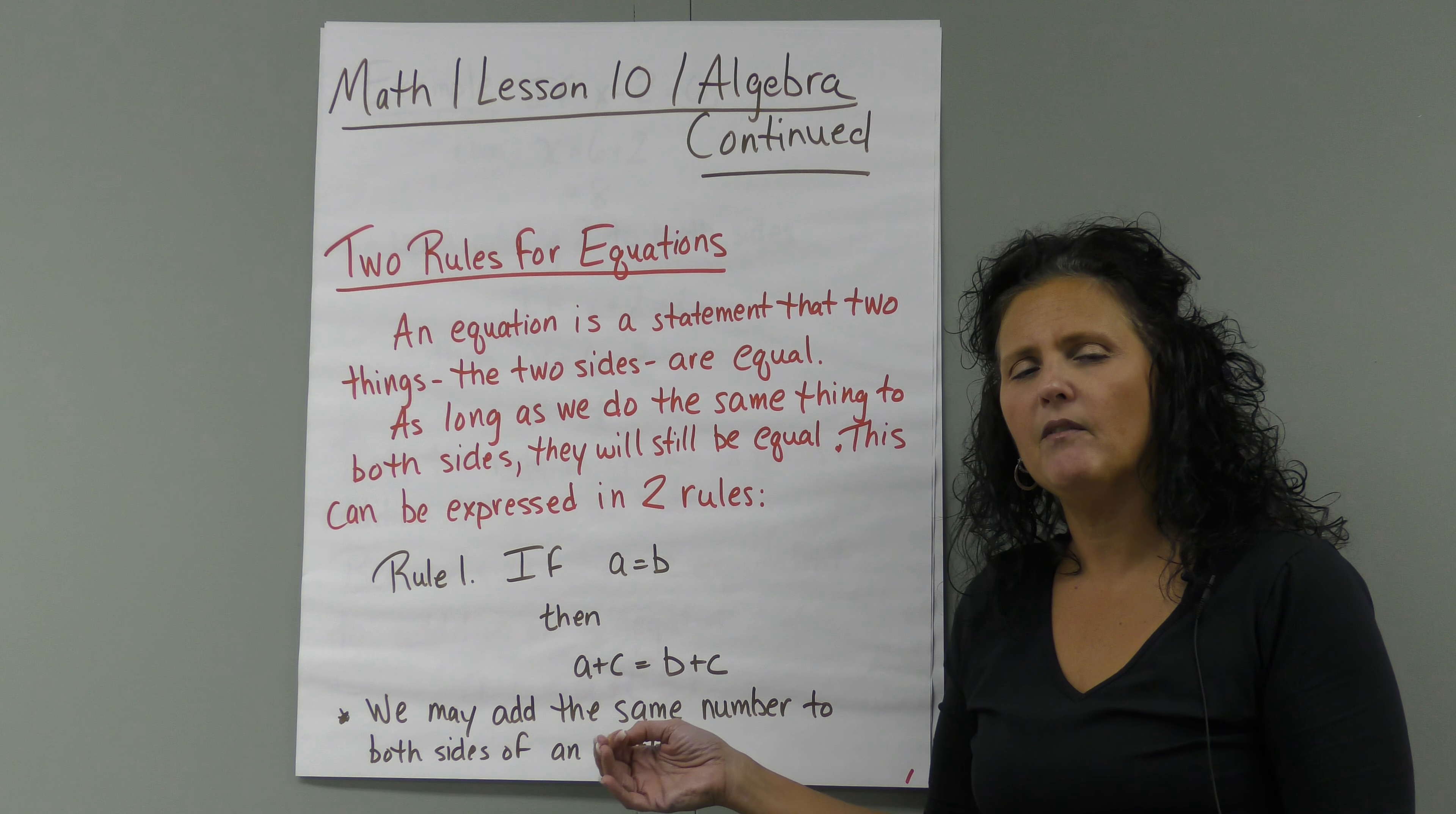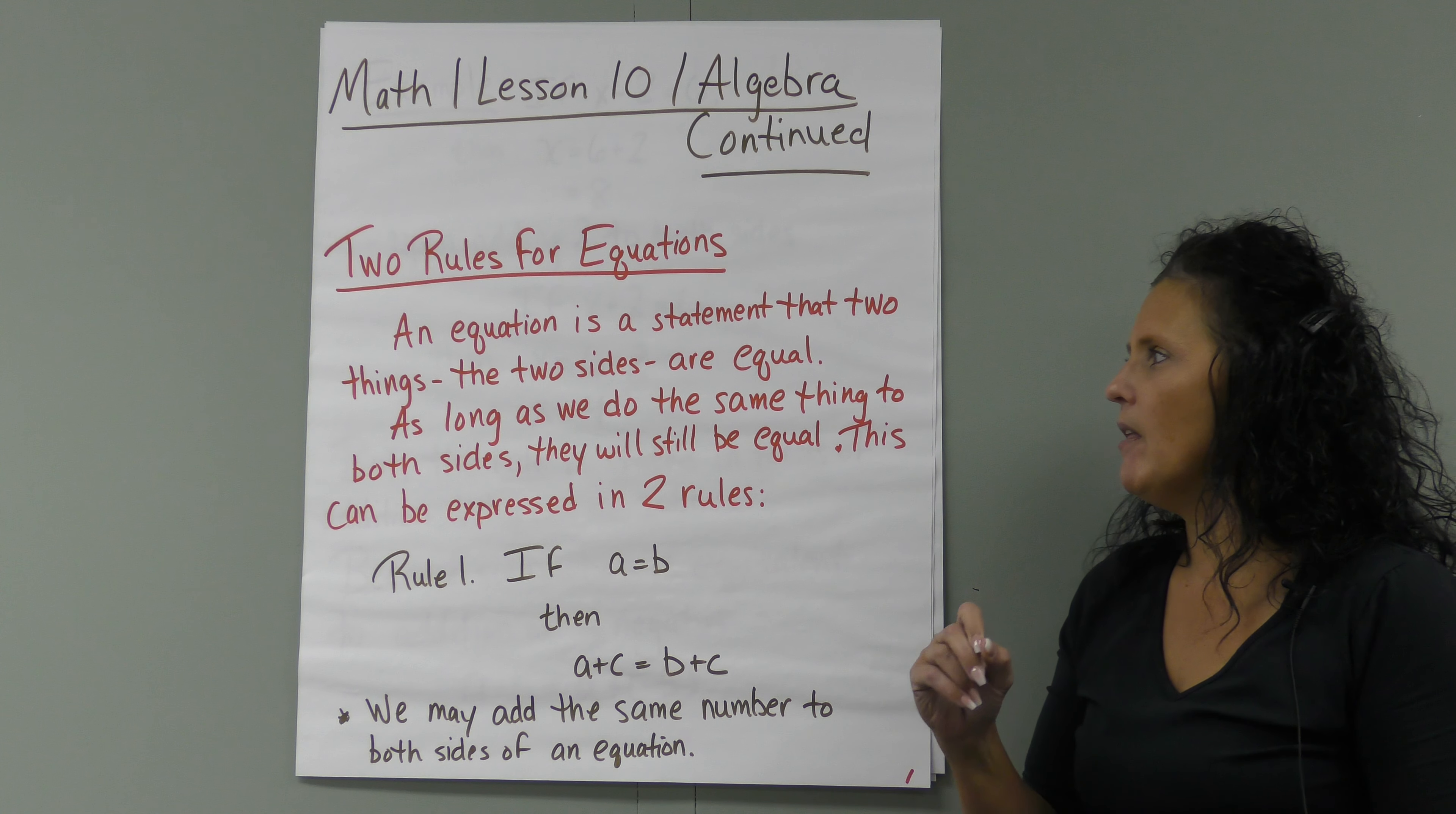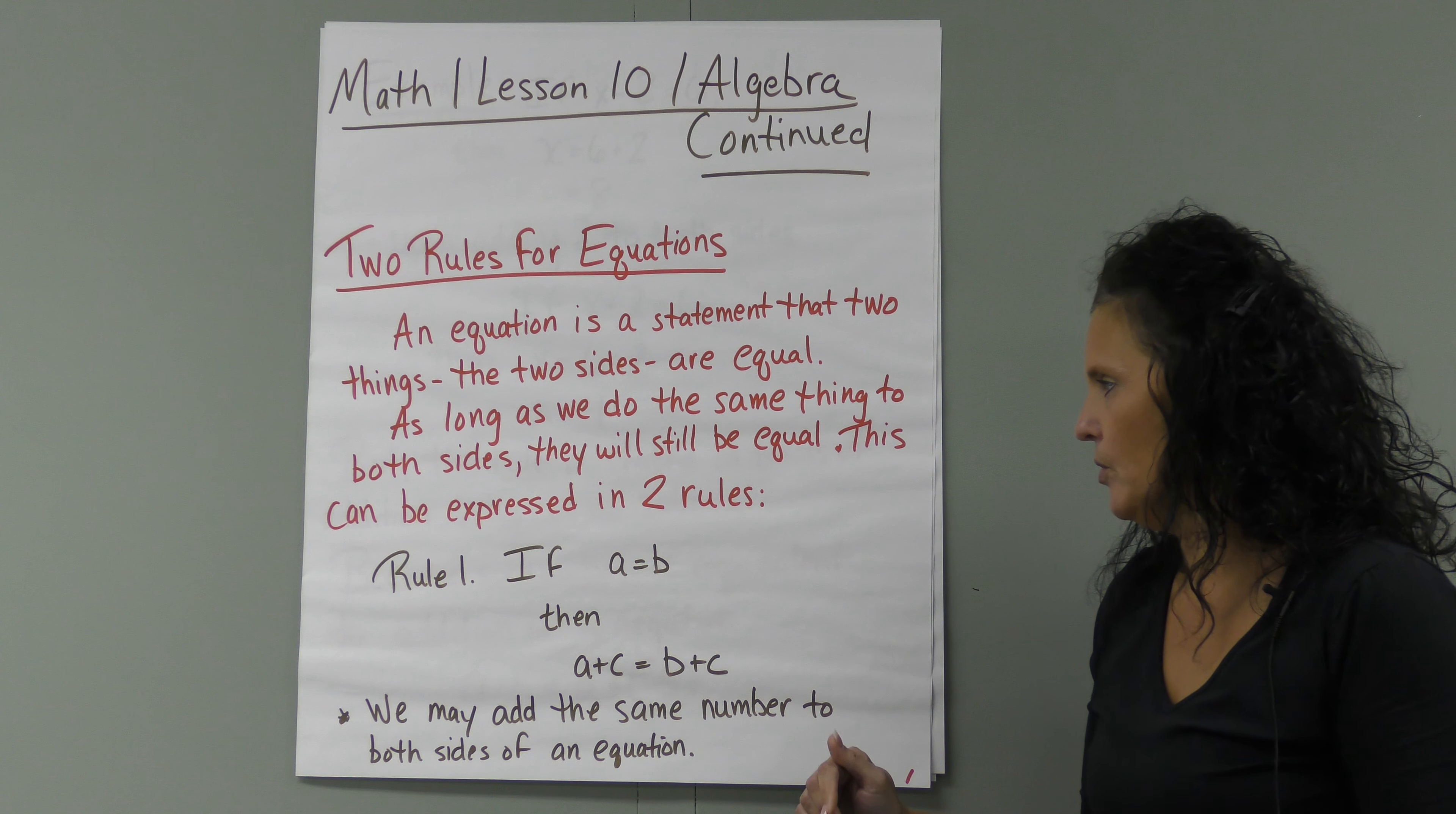This is the second half of our Introduction to Algebra video, so it's Math Lesson 10, Algebra Continued. We want to look at just two rules for equations. An equation is a statement that two things, the two sides, are equal. As long as we do the same thing to both sides, they will still be equal. That's expressed in two rules.